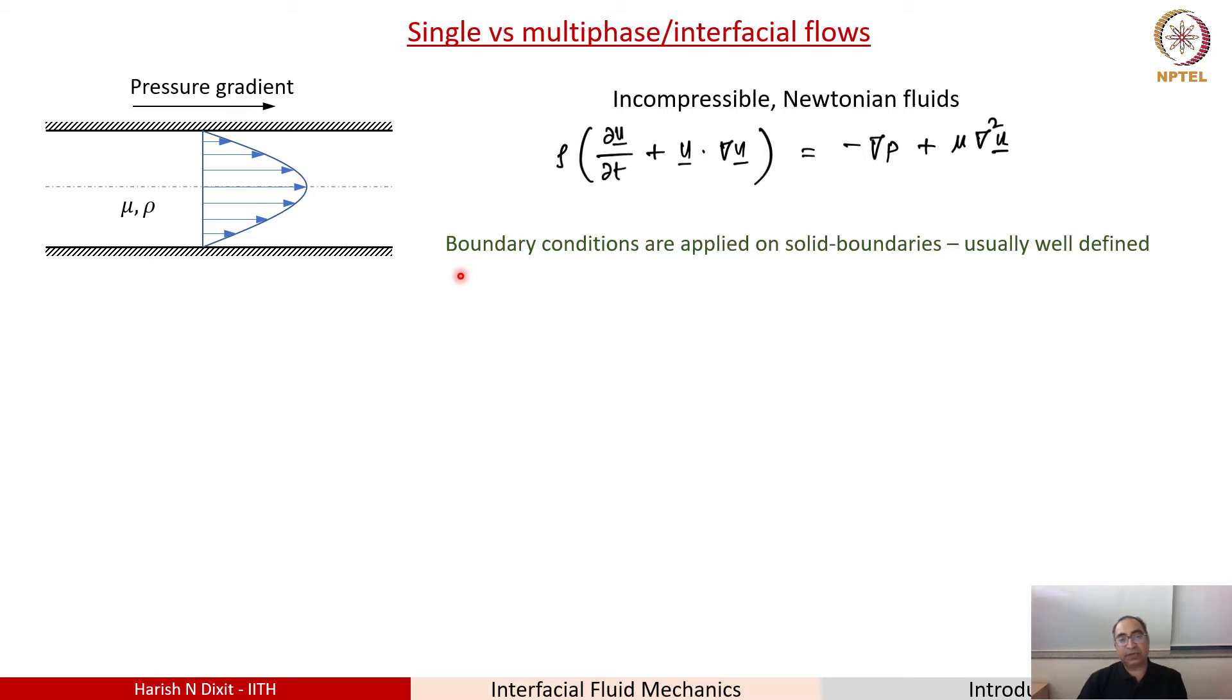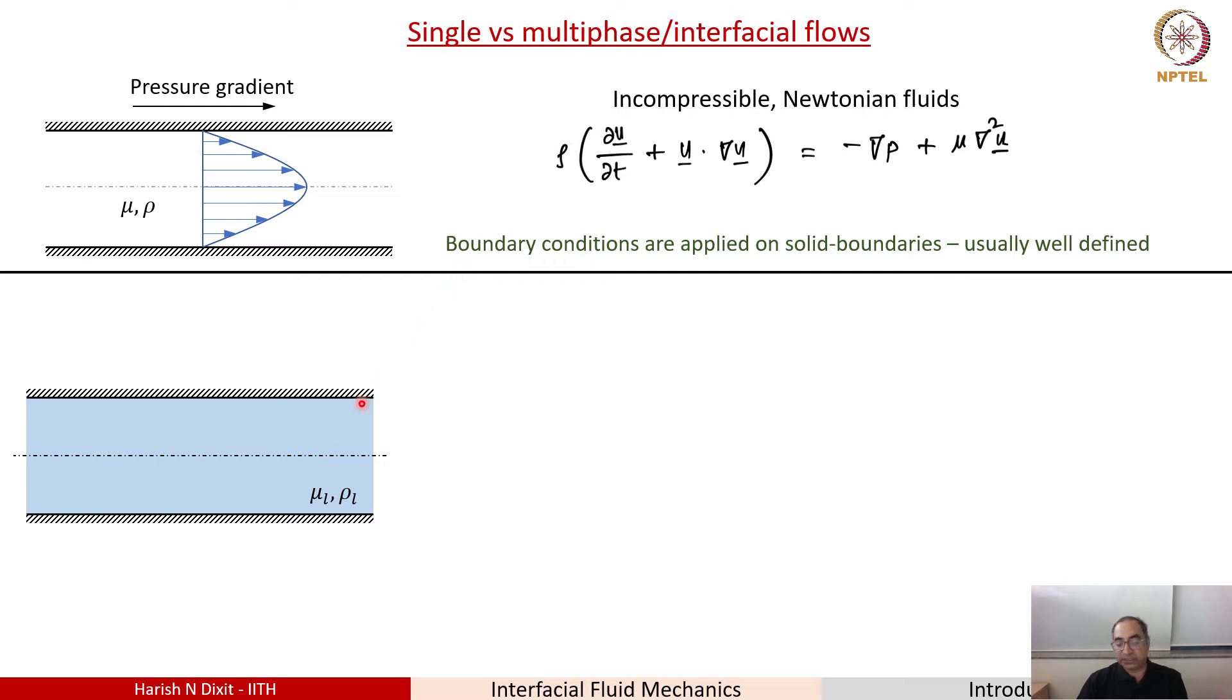Now let's look at a case of an interfacial flow. Now the same problem again, flow in a pipe, you have the walls which are no-slip condition but now you could actually introduce a new complexity. You know the liquid viscosity and the density but now you could be having a bubble that is traveling through the flow. Now you could ask a variety of questions. If I know the gas bubble, the viscosity and the density of the gas bubble, if I apply a pressure gradient, what is the speed of this bubble, and further you could ask what is the shape of this bubble.